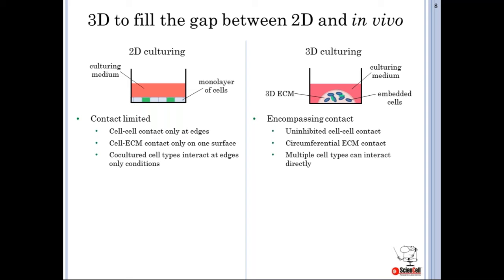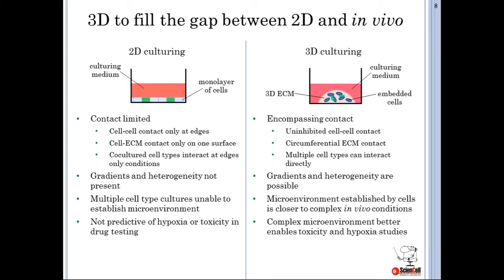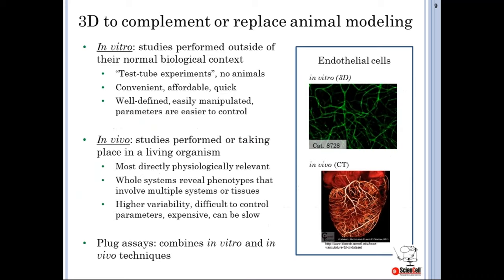In 2D cultures, micro-environments cannot be established since factors diffuse directly and evenly into the liquid medium. Because of this even distribution of factors and nutrients, 2D cultures are poor models for hypoxia or toxicity studies. Meanwhile, 3D ECMs are able to retain soluble factors, enabling the establishment of micro-environments, making them better hypoxia and toxicity models. Additionally, because 2D culturing environments are relatively stressful for cells, their resultant hypersensitivity to drug treatments makes 2D a poor model for drug resistance testing, whereas cells cultured in 3D have greater predictive value.